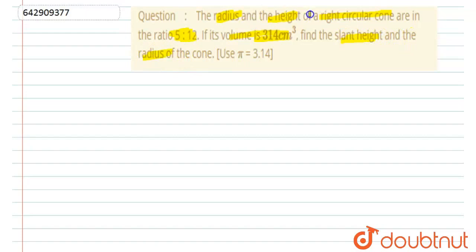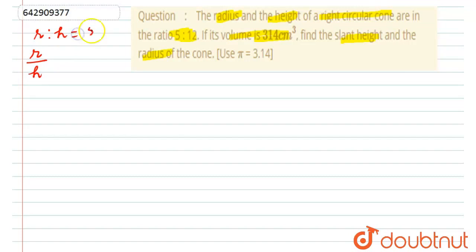If the radius and height of the right circular cone are in the ratio 5:12, then the volume is given. So let the radius R = 5k and the height H = 12k.